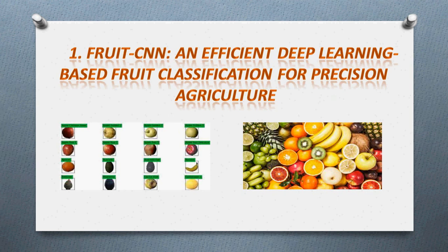This Fruit CNN has a two-level classification. The first level identifies whether the fruit is an apple, banana, or orange. The second level then classifies whether that fruit — say a banana or apple — is damaged or good. We use a convolutional neural network for this classification.